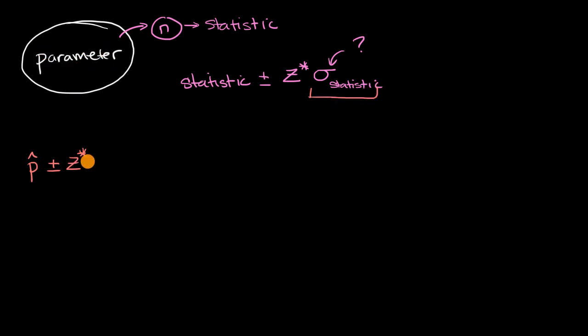So instead we estimate this with the standard error of the statistic, which in this case is p hat times one minus p hat, the sample proportion times one minus the sample proportion, over our sample size.